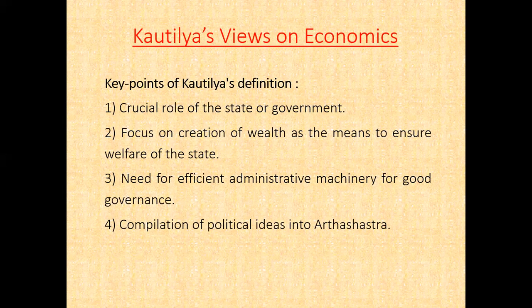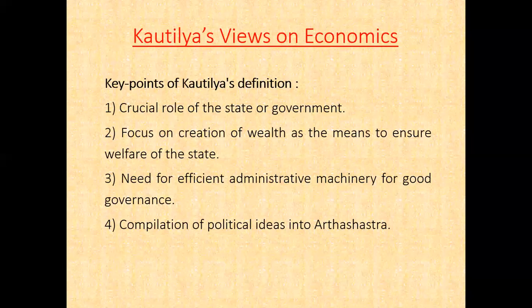Third key point: need for efficient administrative machinery for good governance. Kautilya's book Arthashastra sets the conceptual groundwork for making India the first welfare state. According to Kautilya, to ensure good governance, there must be a properly guided public administration where the ruler should surrender his likes and dislikes in the interest of his subjects, and the personnel running the government should be responsive and responsible. Kautilya further emphasised that for citizen-friendly good governance, there should be uniformity in administrative practices, and competent ministers and officials possessing qualities of leadership, accountability, intellect, energy, good moral conduct, and physical fitness capable of taking prompt decisions.